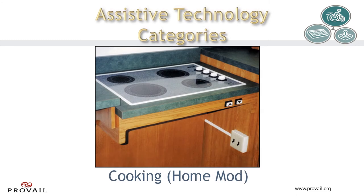Here's a closer look at a height-adjustable cooking surface. This is particularly useful when people both with and without disabilities are sharing the same living area, or perhaps they have different types of disabilities and thus need the stovetop at different heights.